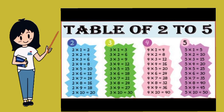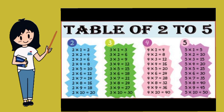Table of two. Two ones are two. Two twos are four. Two threes are six. Two fours are eight. Two fives are ten.